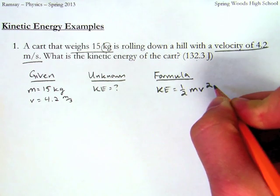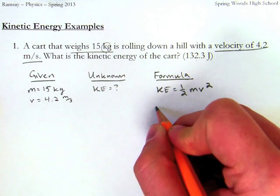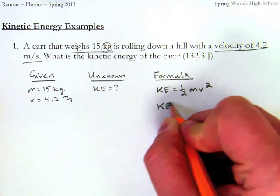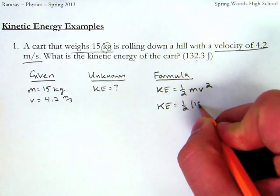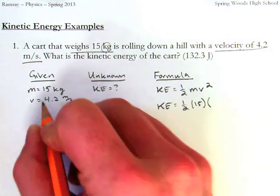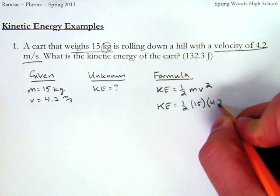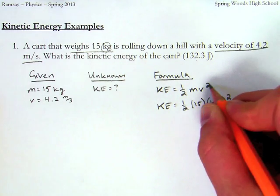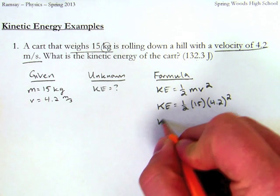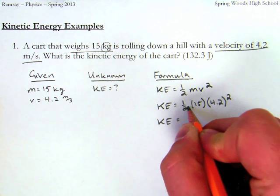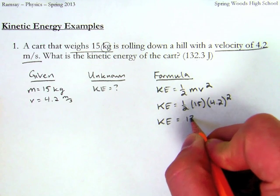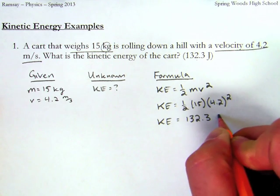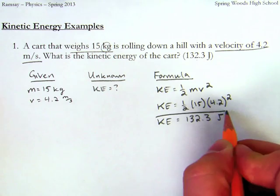Now when I make my substitutions, kinetic energy is going to be one-half the mass, which is 15 kilograms, the velocity, which is 4.2, and I'm going to make sure I don't forget to square that. Now when I do my math, I can just plug this into my calculator, and I see that I'm going to come out with 132.3 joules of kinetic energy. And that is the solution for this first problem.